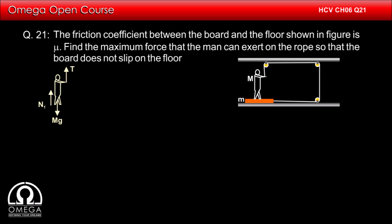Since the system is at rest, upward force on the man must be equal to the downward force acting on it. Therefore, T plus N1 equals capital Mg, which implies N1 equals capital Mg minus T.